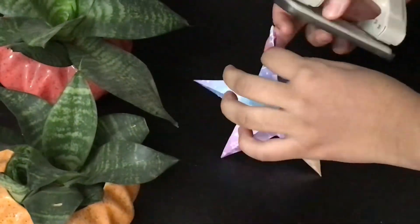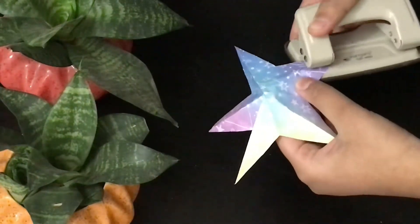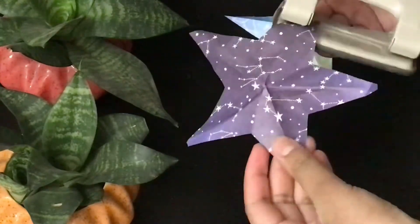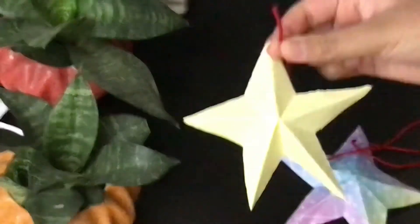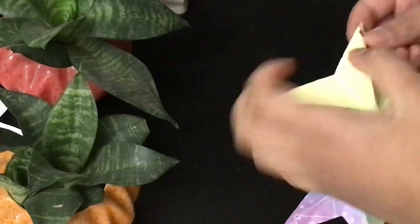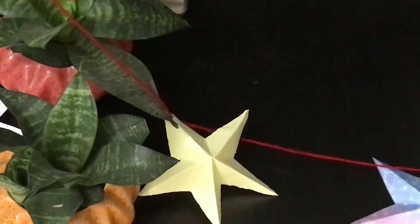Then, take each star and punch a hole at the top part of the star. Then, pass a woolen string from all the holes. You have to repeat this step with all the stars.